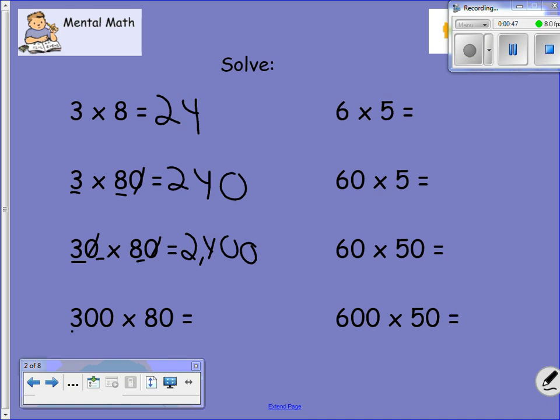300 times 800. Three times eight. 24. Add one, two, three zeros.